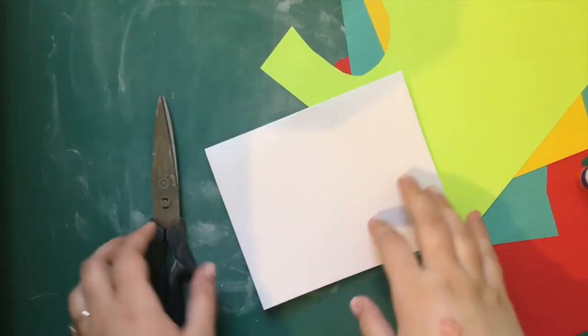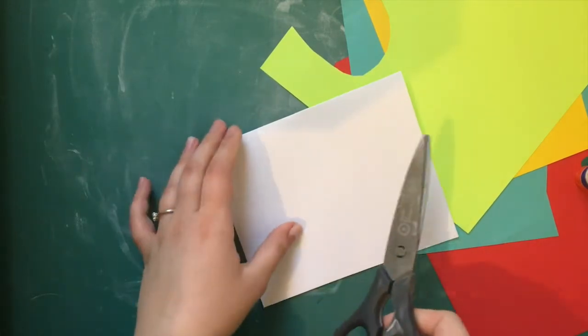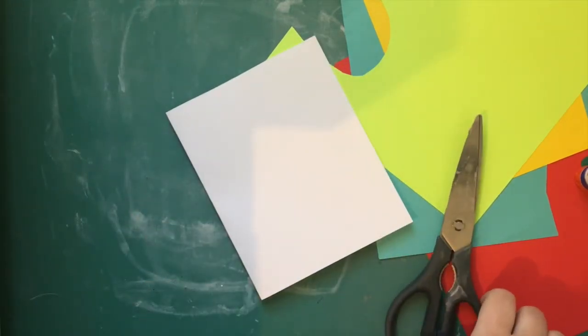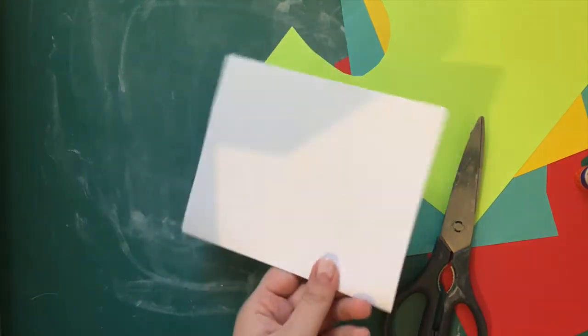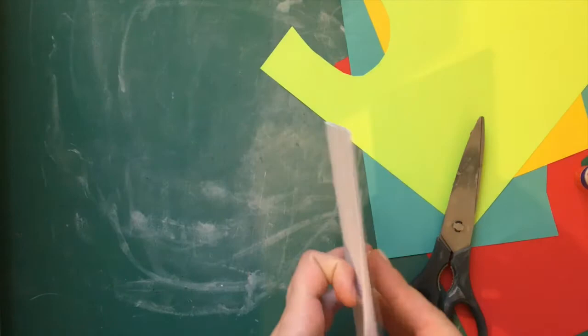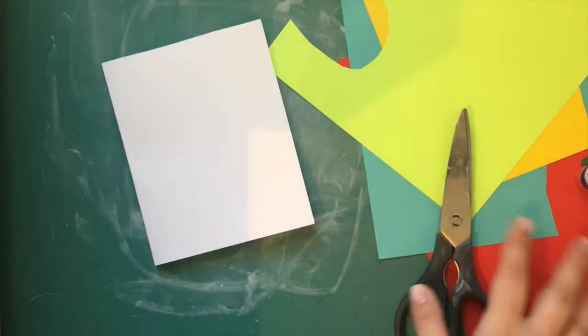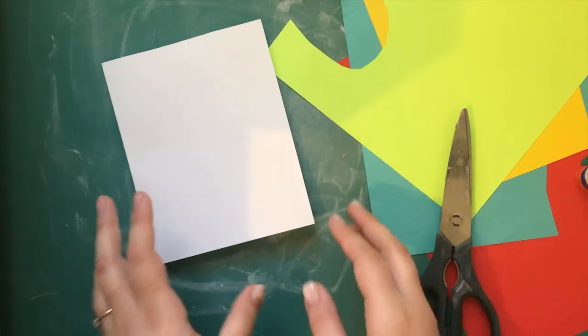All right, so this is really a super simple process that you can change around and add a lot of things to. You're going to need a piece of paper that you can fold in half to make a card, scissors, a glue stick, and then either colored paper or normal paper that you can cut out to make the pop-up.